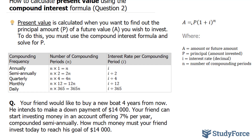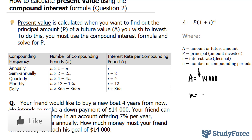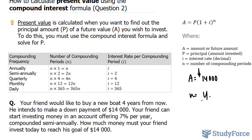But let's assign our values first. We know that A is equal to $14,000 — that is the future amount. N is equal to the number of compounding periods. This is going to happen for 4 years and it is being compounded semi-annually. To find N, you take 4 years and multiply it by the number of times it's compounded every year. Since it's semi-annually, that's times 2, so 4 times 2 equals 8.